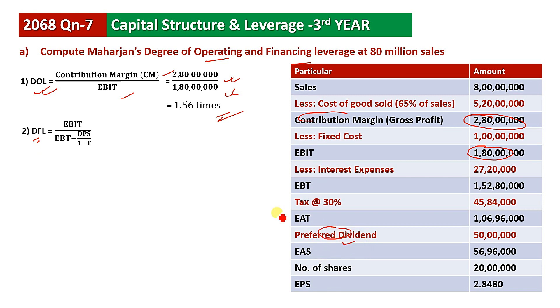Degree of financing leverage: EBIT divided by EBT minus DPS divided by 1 minus tax. EBIT is 18 million, EBT is 15.28 million.